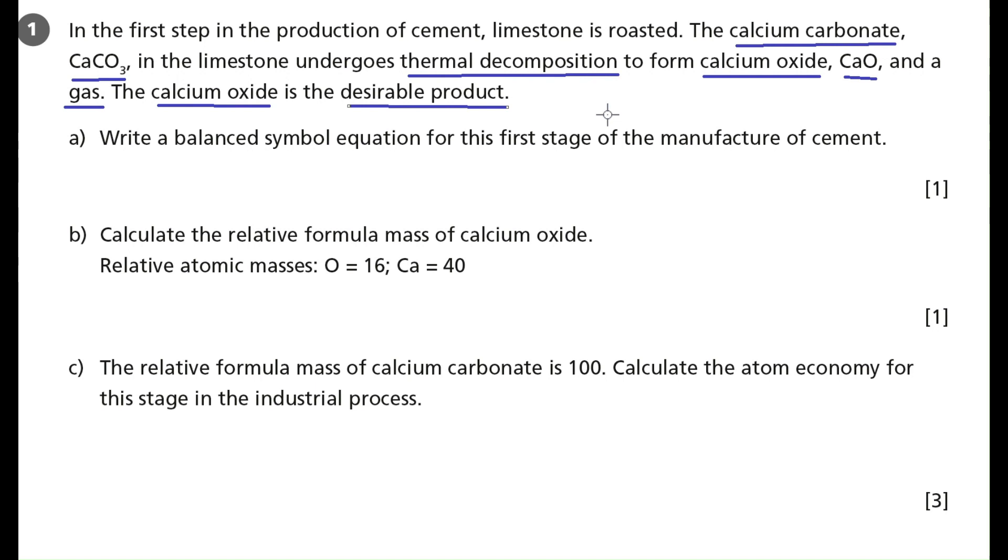So let's look at the question together. Part A: Write a balanced symbol equation for the first stage of the manufacture of cement. So what's the command word here? The command word is write. What are the key information they've given us? They want a balanced symbol equation. And they want the first stage of the manufacture of cement. So we're going to start by thinking about the reactants. And the reactants is only one in this case. And that's calcium carbonate. And we need to write that formula down to be the starting point.